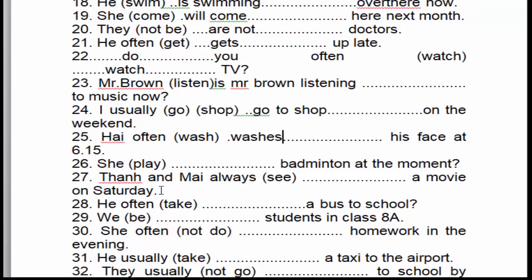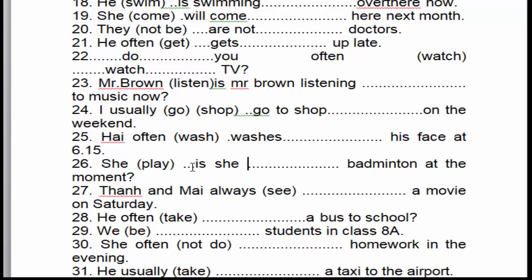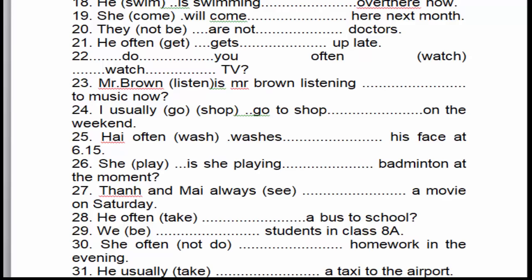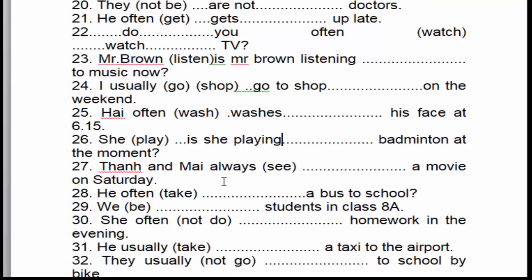Câu tiếp theo: 'Is she playing badminton at the moment?' — 'At the moment' là dấu hiệu nhận biết của thì hiện tại tiếp diễn. Đây là dạng câu hỏi, cho nên chúng ta phải sử dụng to be 'is' đặt trước đầu câu, rồi tới chủ ngữ 'she', rồi tới động từ thêm '-ing'. Câu tiếp: 'Anh and Mai always see a movie on Saturday.' 'Always' là dấu hiệu nhận biết của thì hiện tại đơn. 'Anh and Mai' là chủ ngữ số nhiều, cho nên động từ để nguyên mẫu.